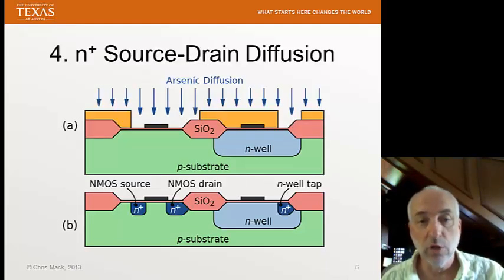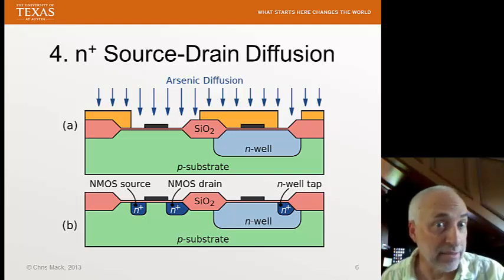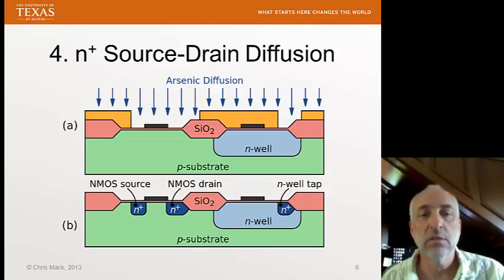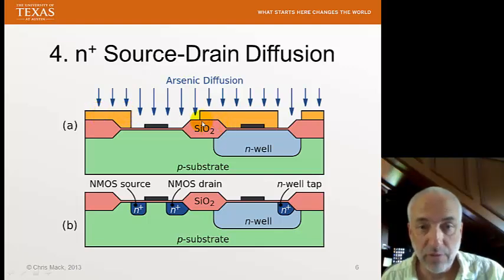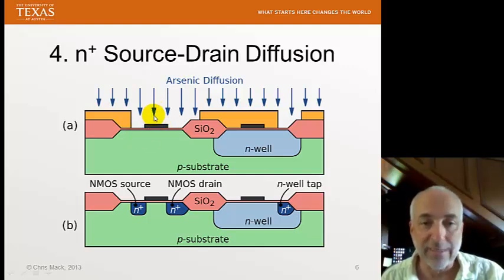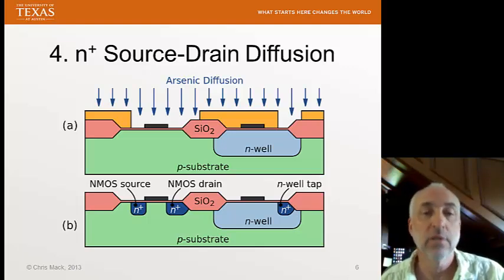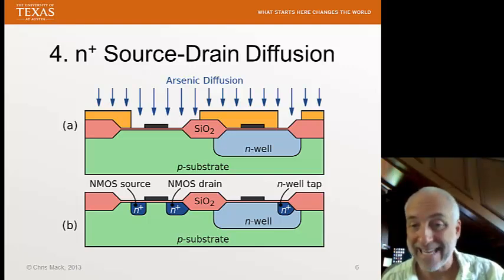Now we're going to do our doping for the source and drain, and we have to do it in two steps because we're forming both a P-channel device and an N-channel device. For the N-channel device, we need to deposit donors — N-type dopants — into the source and drain region. We use arsenic for our dopant. We cover with photoresist all regions where we don't want the arsenic to go, so the dopant is blocked. In the source and drain regions, we form our dopants and diffuse them into the substrate. Notice that the gate also acts as a block to prevent dopants from getting underneath it — we call this a self-aligned gate process, because the source and drain are self-aligned to the gate.